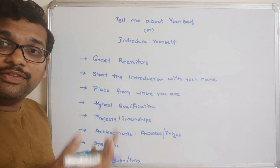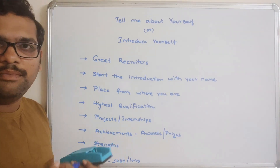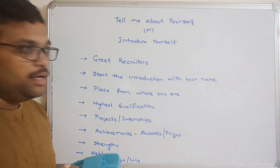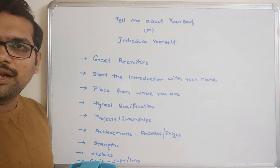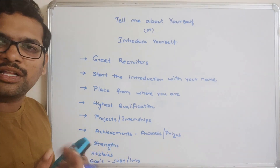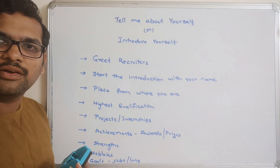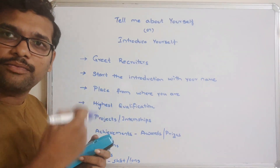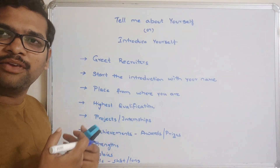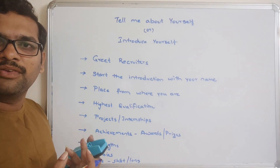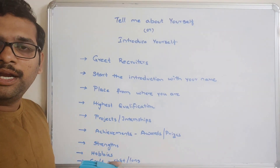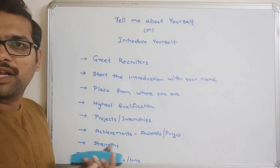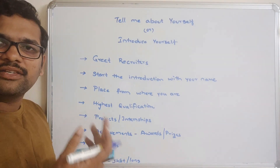Then start the introduction with your name. Say 'My name is Sandeep Saradi' or 'I am Sandeep Saradi.' Next, mention the place you are from. For example: 'I am coming from Machlipatnam' or 'My native place is Machlipatnam, and now I am working in Bapatla.' Like this, you can say your place.